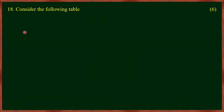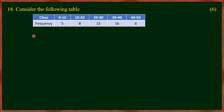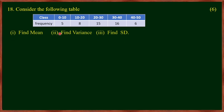Now in the statistics chapter: look at the following frequency table. The class intervals are 0–10, 10–20, and so on. We need to change the values using a step deviation method.